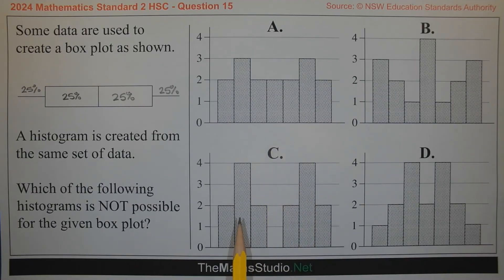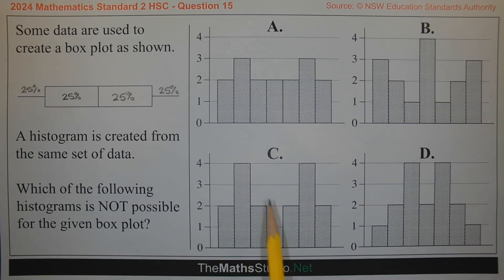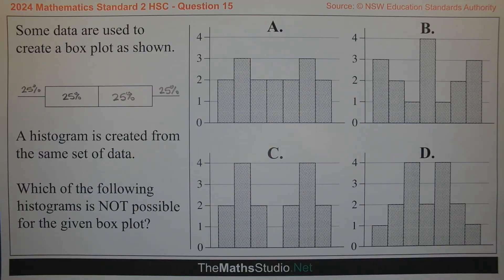Same thing with option C. We can see a concentration of data here and here which again corresponds to the tails.